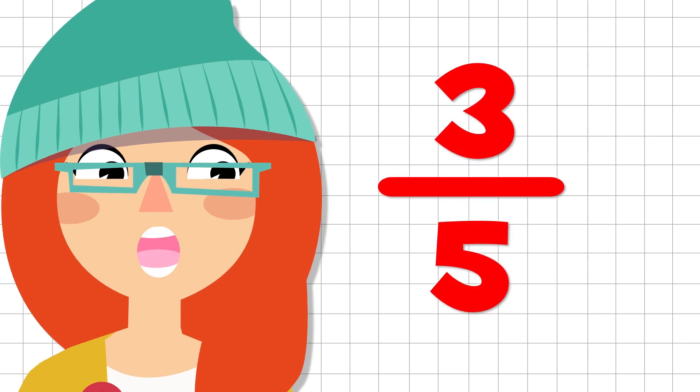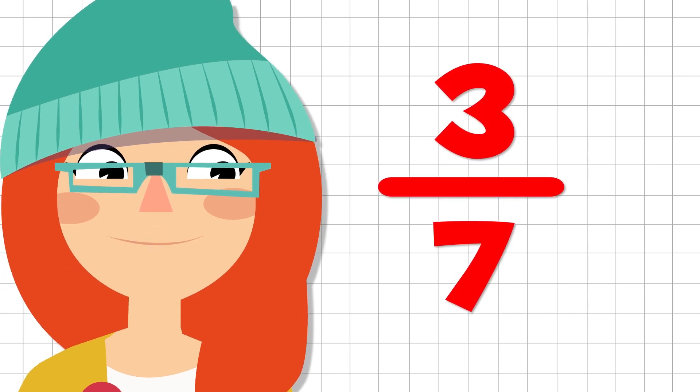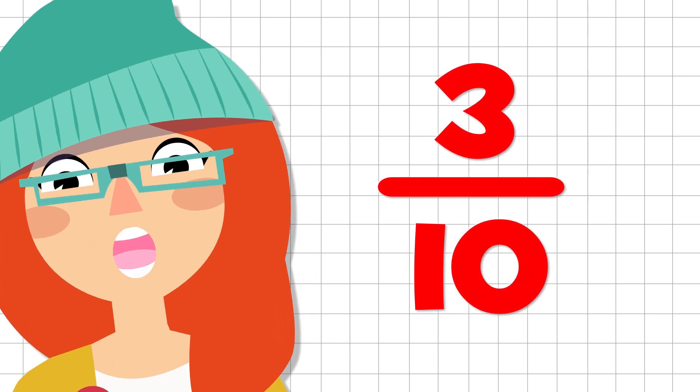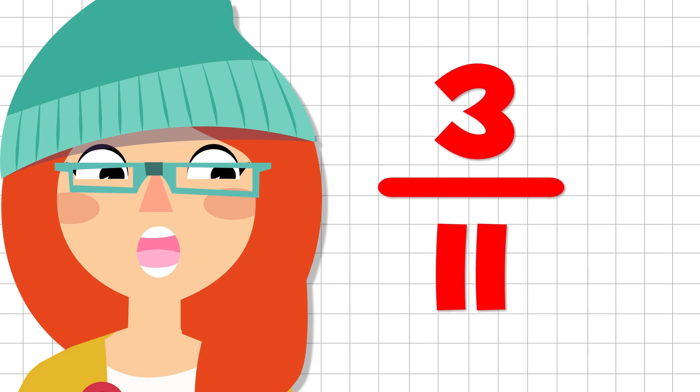If the denominator is a five, we say fifths. If it's a six, we say sixths. If it is a seven, we say sevenths. If it's an eight, we say eighths. If it's a nine, we say ninths. And if it's a ten, we say tenths. Easy, right?